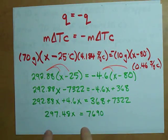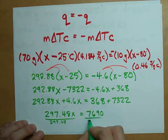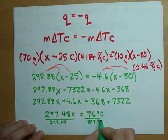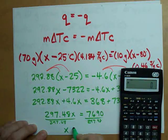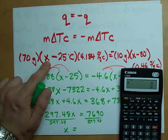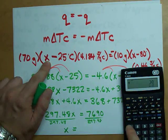How do you solve for x? Divide both sides by what's in front of x. Divide it by 297.48. And the answer, x, which represents my final temperature, ends up being 7690 divided by 297.48.